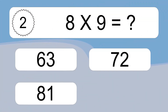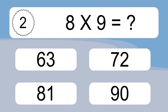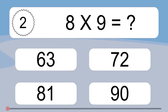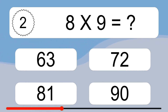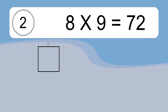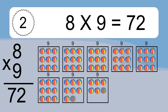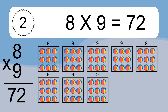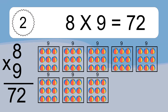8 times 9 equals what? 8 times 9 equals 72. We have 8 boxes and each box has 9 colorful balls inside. If you count all the balls in all the boxes together, you will have 8 times 9 balls. This equals 72 balls.